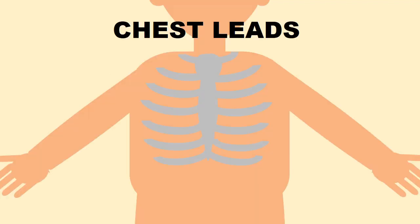Six more unipolar leads are obtained from the six electrodes placed on the chest wall. V1 is attached to the right side of the sternum in the fourth intercostal space, V2 is attached to the left side of the sternum in the fourth intercostal space, and V3 is midway between V2 and V4.